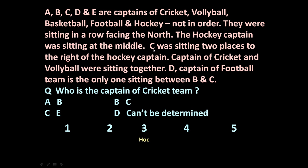The next statement is: C was sitting two places to the right of the hockey captain. The hockey captain is sitting at position 3. This is the right side and this is the left side. So C will occupy position 5.